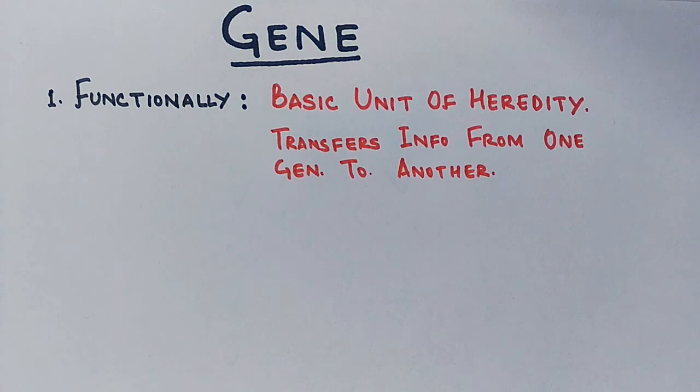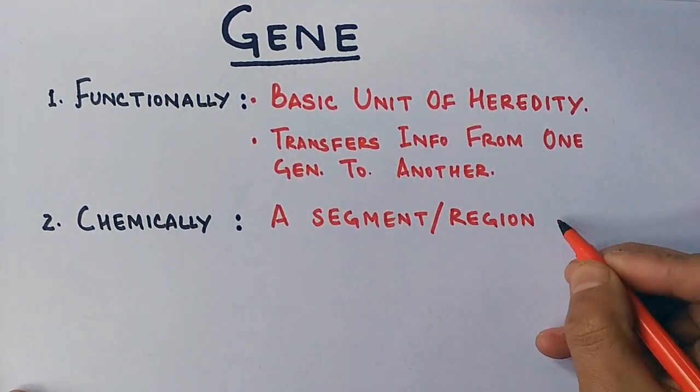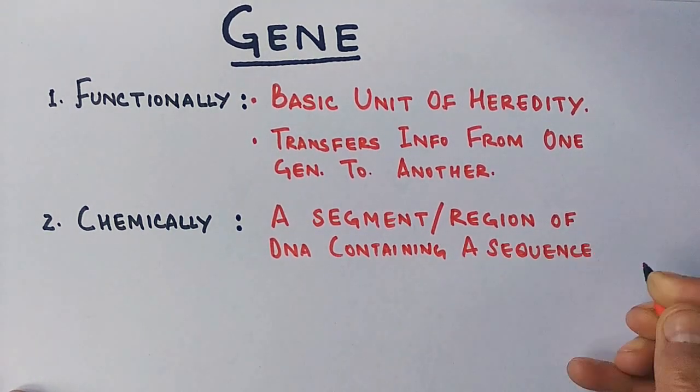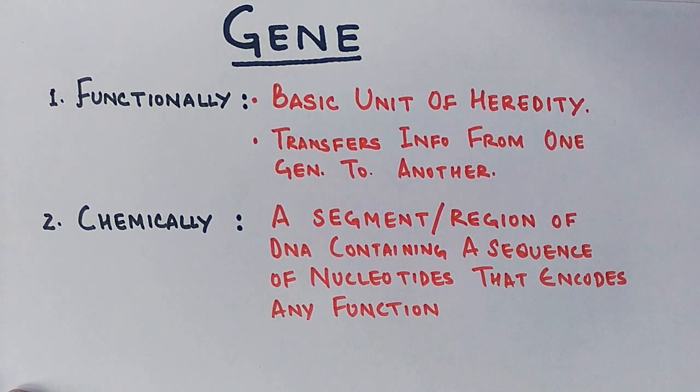And if we see chemically what gene is, we say it's a segment or a region of DNA containing a sequence of nucleotides that encodes any function. A function can be how to make a protein, what protein is to be made, and these proteins interact with each other and define a desired function in our body.